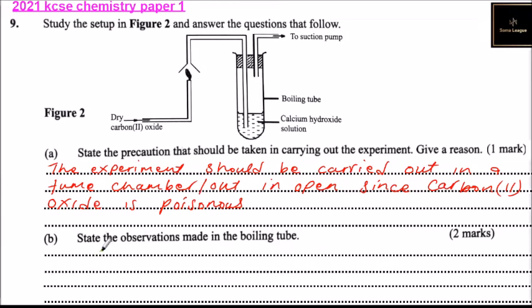Part B state the observation made in the boiling tube. What will be observed is a white precipitate is formed which dissolves to form a colorless solution.